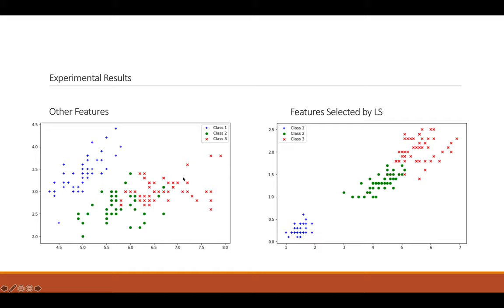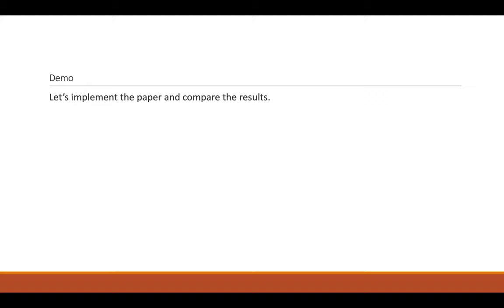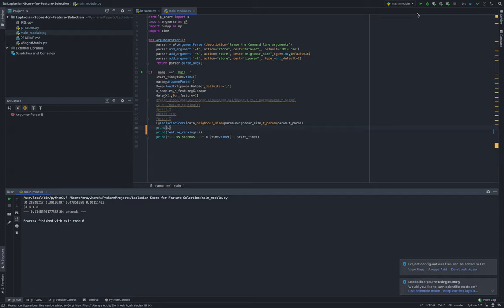Let's look at the implementation of the codes. Let's start with calculating Laplacian score. As you can see, if a feature has lower Laplacian score, that means it has higher importance. That means that feature has higher importance. In this case, the third feature is the most important one, then the fourth.